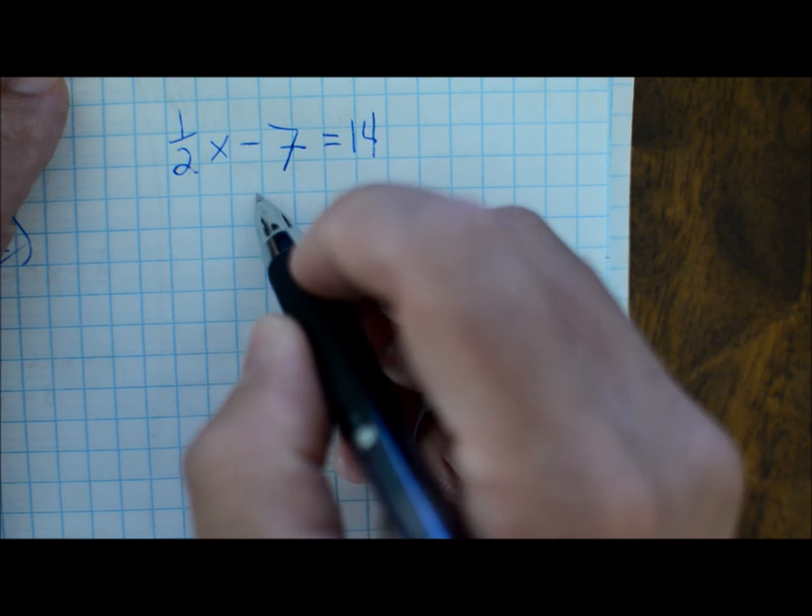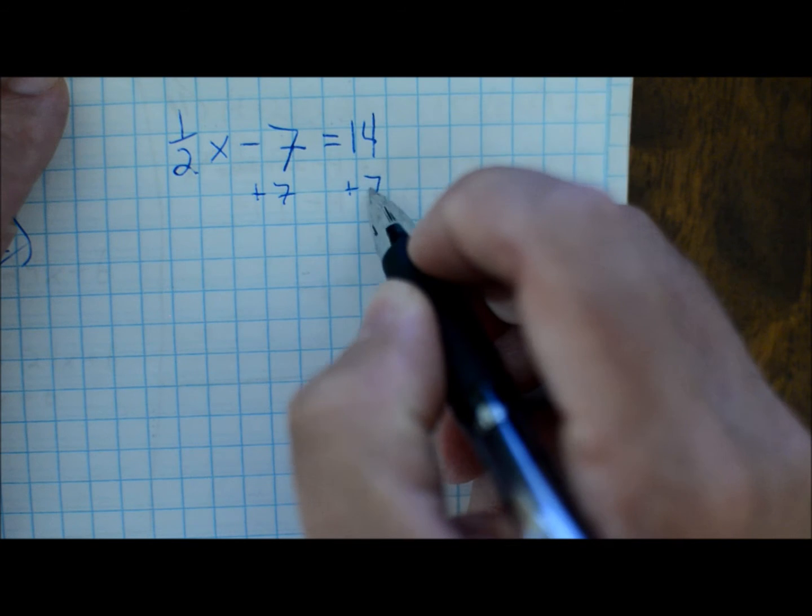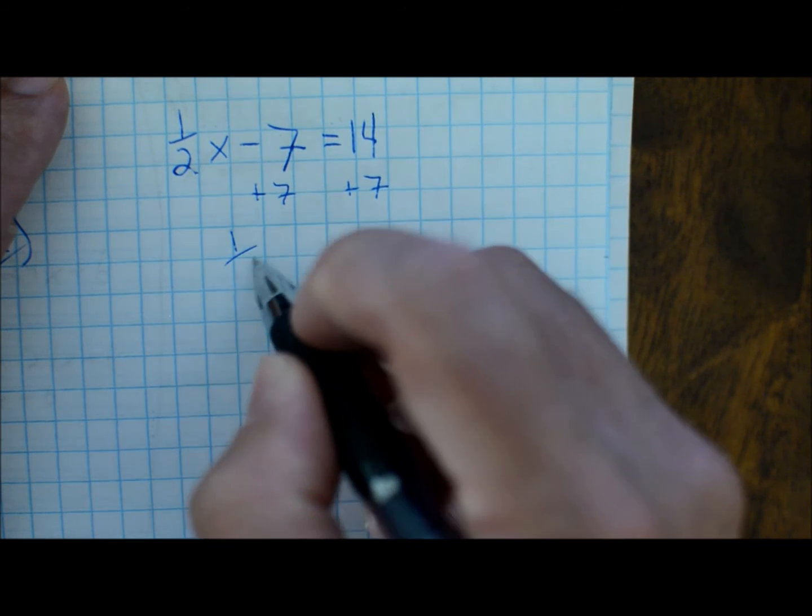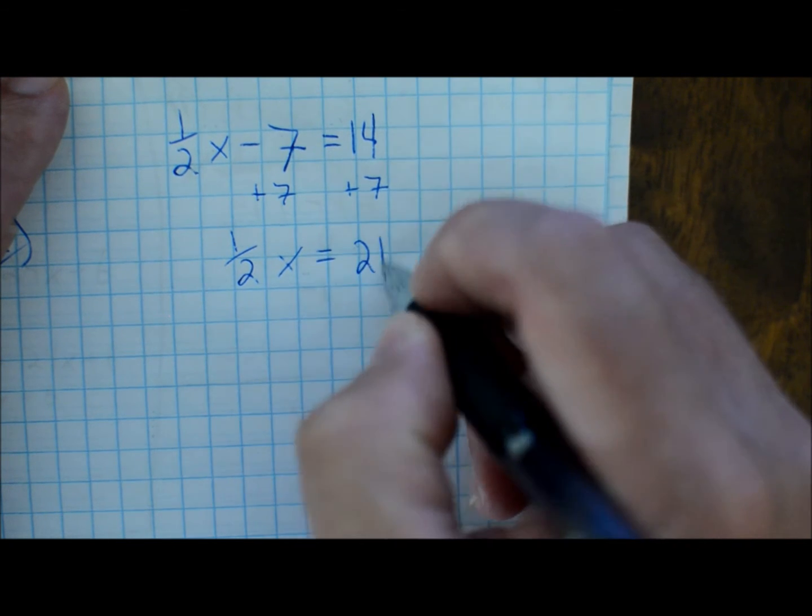Okay, so you do everything on both sides, right? So you add that 7 to both sides, and you end up with one half of whatever this x is, is going to be equal to 21.